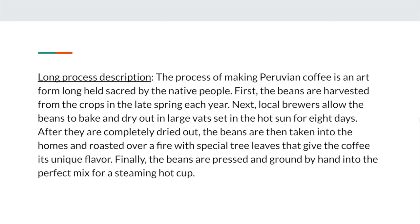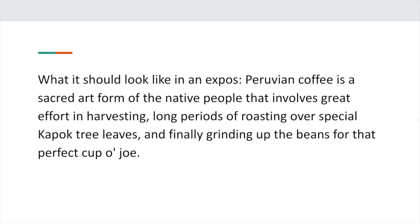Now look at how you can condense that whole paragraph down into one sentence. This is what it should look like: 'Peruvian coffee is a sacred art form of the native people that involves great effort in harvesting, long periods of roasting over special capoc tree leaves, and finally grinding up the beans for that perfect cup of joe.' Notice how it says the exact same thing — you haven't lost anything — but it does it in such a more concise way. Moreover, that opens up room for you to then be able to crack a joke in the next sentence.